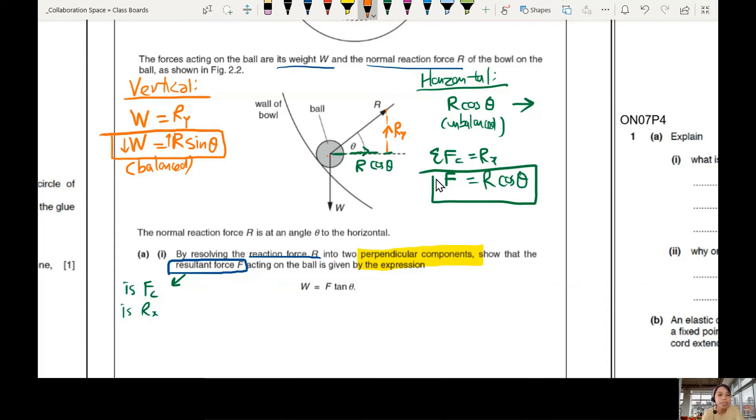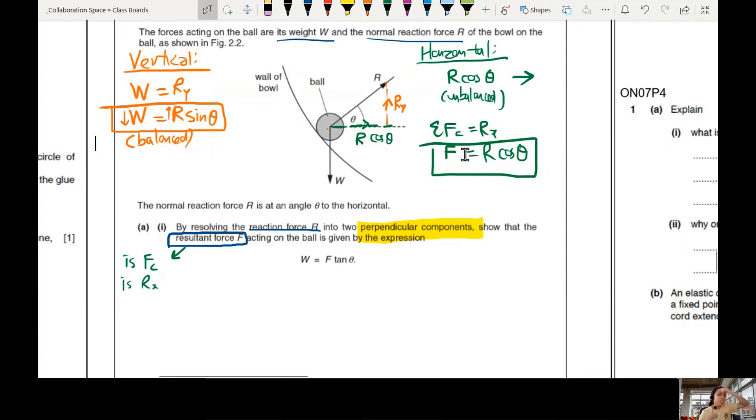Alright, so now what to do when you see tangent? Think of tangent is sine over cos. So we are going to divide sine over cos. Let's call this equation 1.